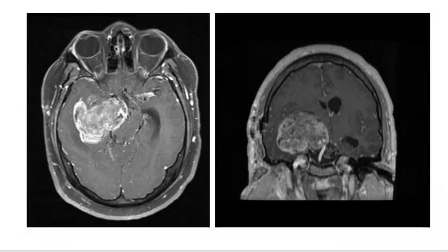Gliomas — and we're going to be spending most of the time talking about glioblastomas — are the most common adult primary brain tumor and are unfortunately incredibly aggressive, relatively resistant to therapy, and have a corresponding poor survival. They typically appear as a heterogeneous mass centered in the white matter with irregular peripheral enhancement, central necrosis, and surrounding vasogenic type edema, which in fact usually contains infiltration by neoplastic cells.